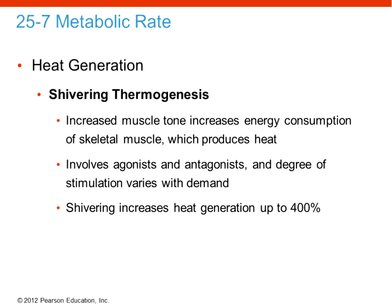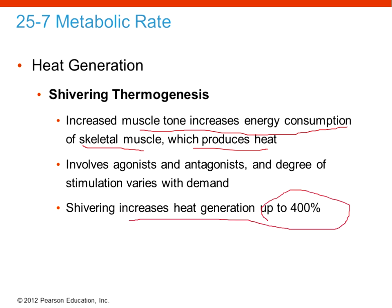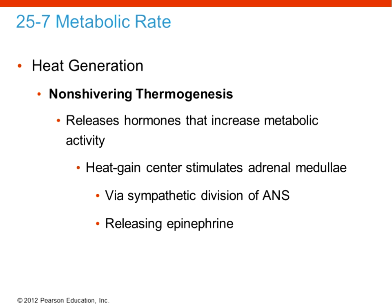Shivering thermogenesis is another way to generate heat. Skeletal muscle contraction produces a lot of heat. Shivering, or shivering thermogenesis, increases muscle tone and energy consumption. Shivering can increase heat generation up to 400% because large skeletal muscles are contracting and producing heat, helping to raise core temperature back up.